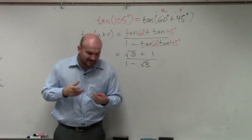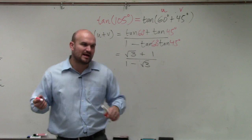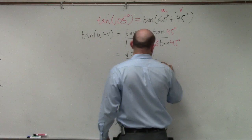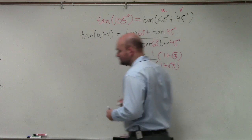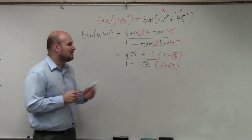So then we need to simplify this, because our simplified form is not going to include a radical in the denominator. So therefore, we're going to multiply by the conjugate.